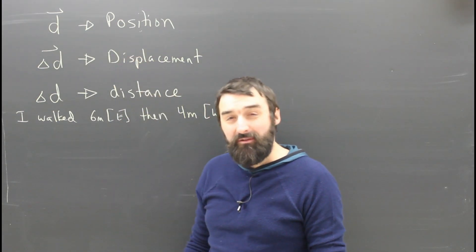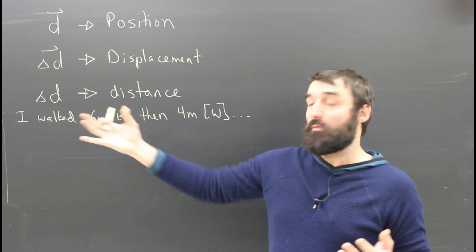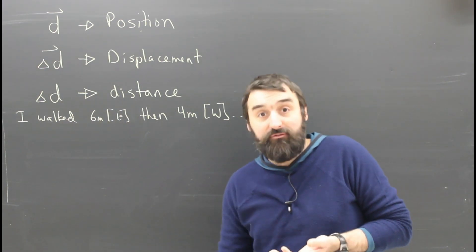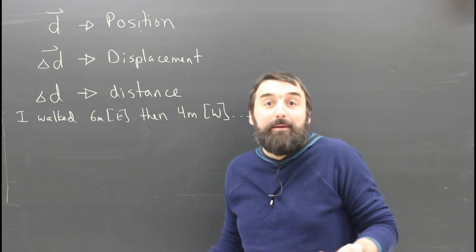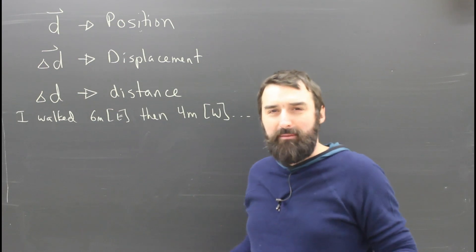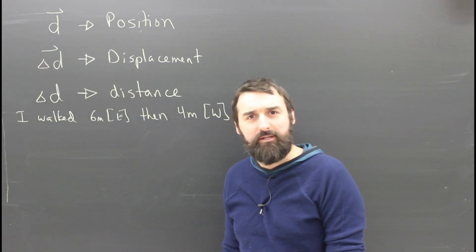So position is a vector: how far you are from the spot that we're calling zero. I'm right now on the third floor, third floor relative to the ground which we call zero. So that's my position right now on the third floor. If I called the basement zero, I'd be on the fourth floor. But that would be crazy.